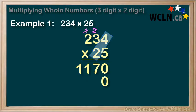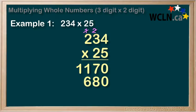2 times 4 is 8. 2 times 3 is 6 — nothing to carry in this case. 2 times 2 is 4, and again there's nothing to carry.